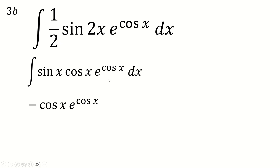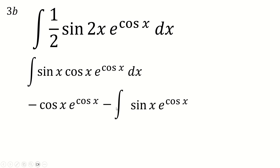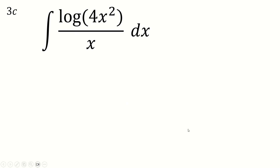Leave cos x alone and differentiate it, while integrating sine x times e to the cos x, which gives minus e to the cos x, since cos differentiates to minus sine. Differentiating cos x gives minus sine x, and we also have the minus from the integral of the other terms and the minus from the minus-integral term in parts. Three minuses make a minus overall, and then the final integration gives our answer.